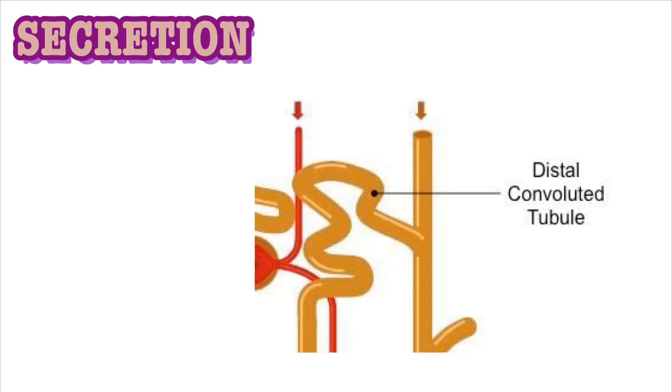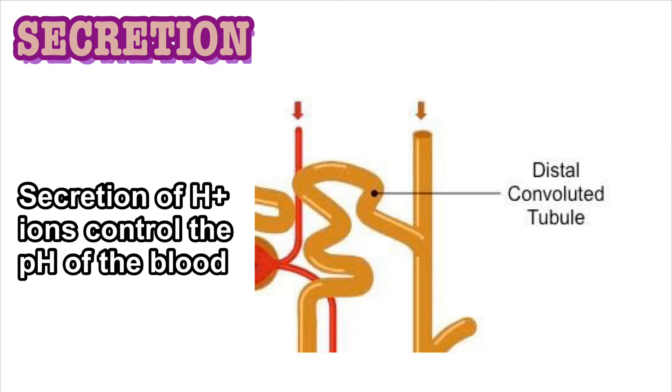The last stage is secretion. Substances such as ions like potassium ions and hydrogen ions are dumped into the nephron, and this all takes place at the distal convoluted tubule. This is an important process because the secretion of hydrogen ions controls the pH of the blood, which can help in homeostasis. So the kidneys are not only an organ of secretion, but are also involved in homeostasis. What eventually passes out of the collecting duct is urine, which is composed of salt, water, and urea.